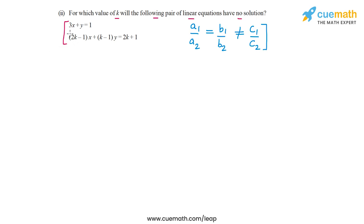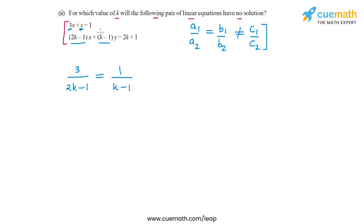Let's apply this constraint to find the value of k. A1 is 3 and A2 is (2k minus 1), so A1 by A2 is 3 by (2k minus 1). The coefficient of y in the first equation is 1 and in the second is (k minus 1), so B1 by B2 is 1 by (k minus 1). These two ratios should be equal. The constant term ratio C1 by C2 becomes 1 by (2k plus 1).